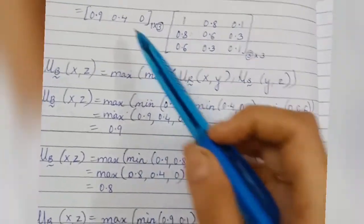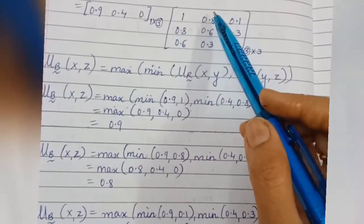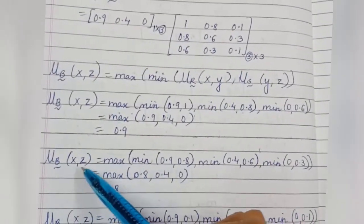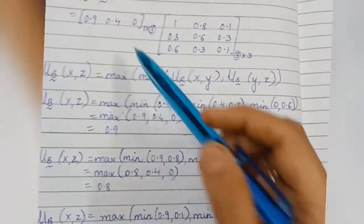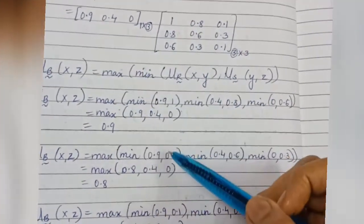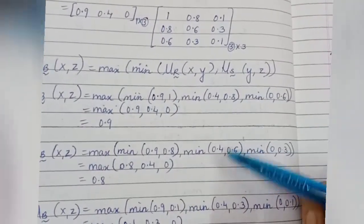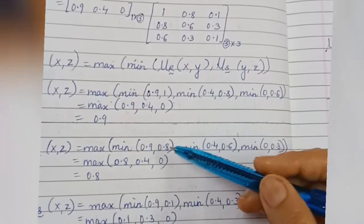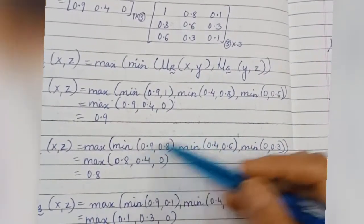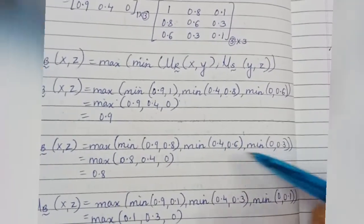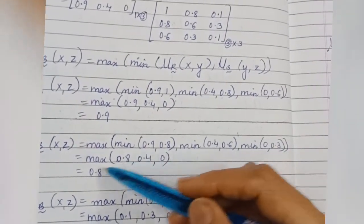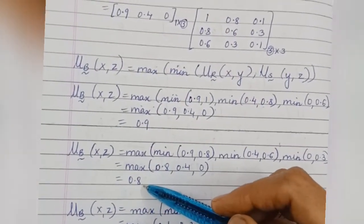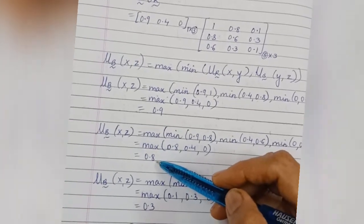For the second element, consider the same first row and now the second column of the relation matrix. μ_B(x, z) = max{ min(0.9, 0.8), min(0.4, 0.6), min(0, 0.3) }. Minimums are 0.8, 0.4, 0. The max of these three is 0.8. So the second element is 0.8.